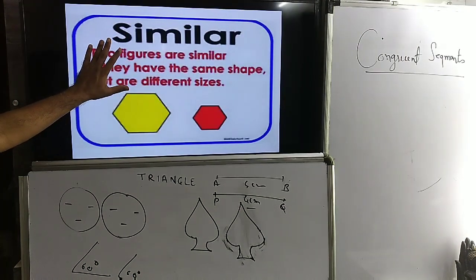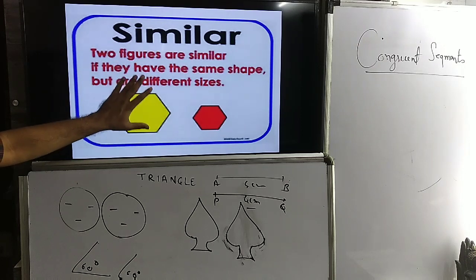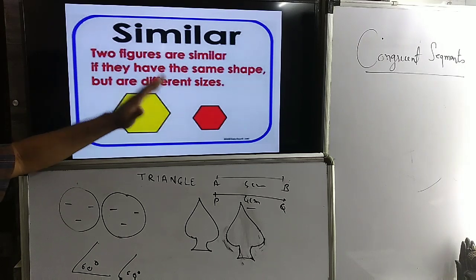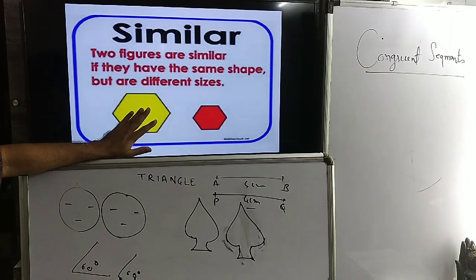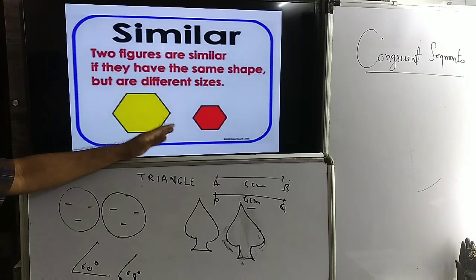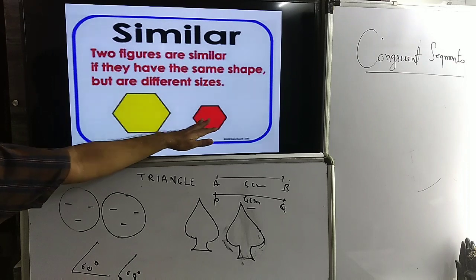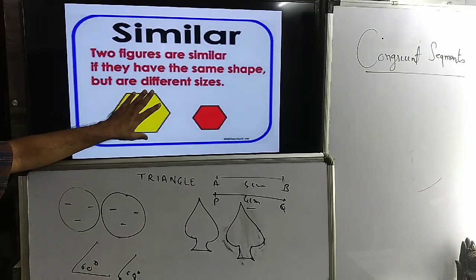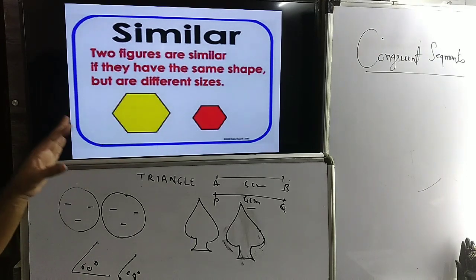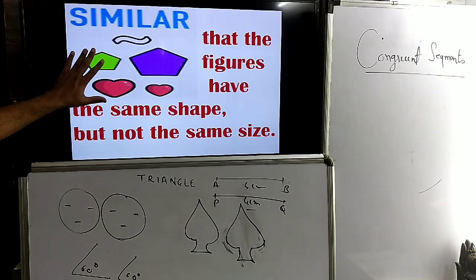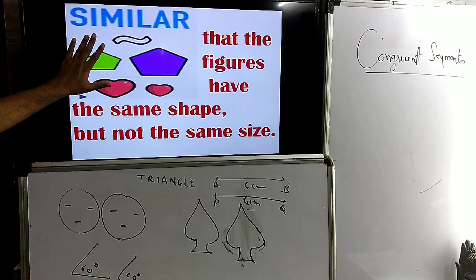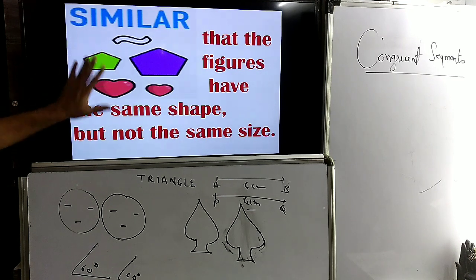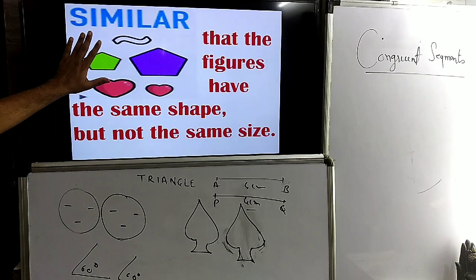Two shapes are said to be similar if they are in the same shape but may be of different size — maybe reduced size or enlarged size. These two hexagons: this is a small hexagon and this is a large hexagon. These are two regular hexagons but of different sizes. These are an example of similar figures. Two shapes are said to be similar if they have the same shape but may be of different sizes.